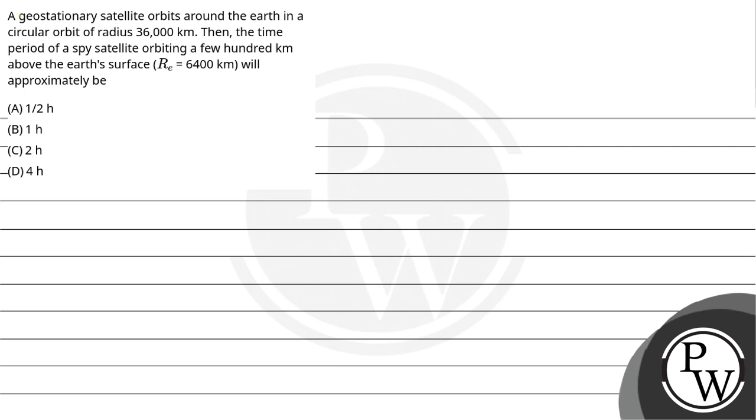Hello, let us read the question. A geostationary satellite orbits around the earth in a circular orbit of radius 36,000 km. Then the time period of a spy satellite orbiting a few 100 km above the earth's surface will approximately be